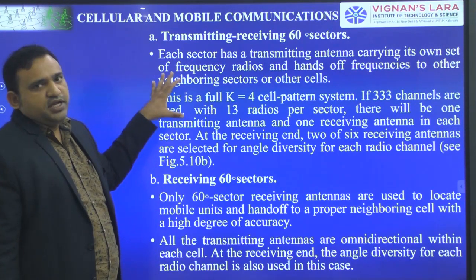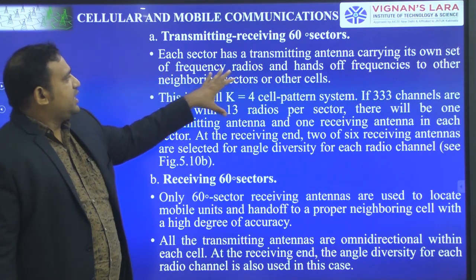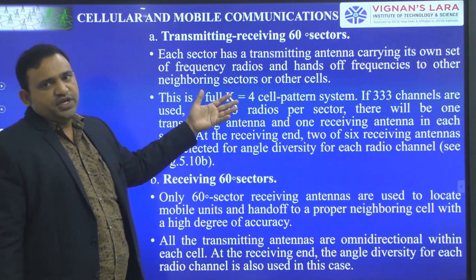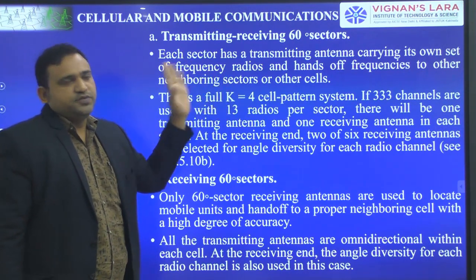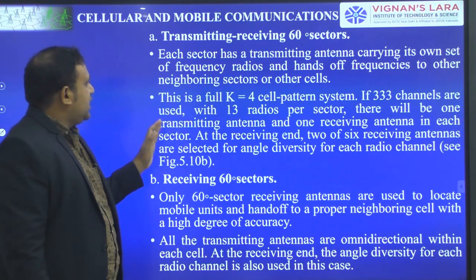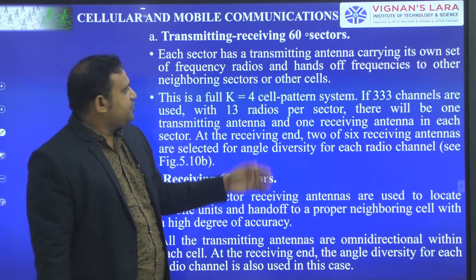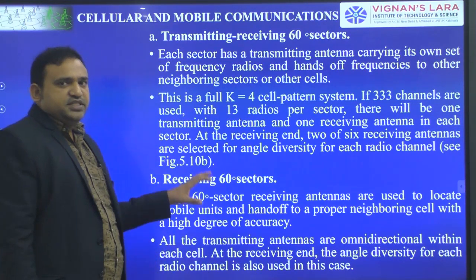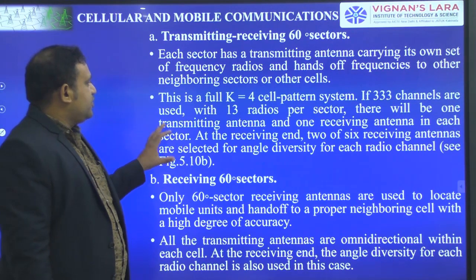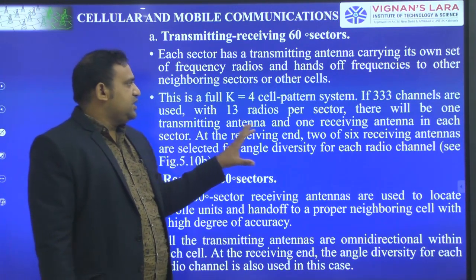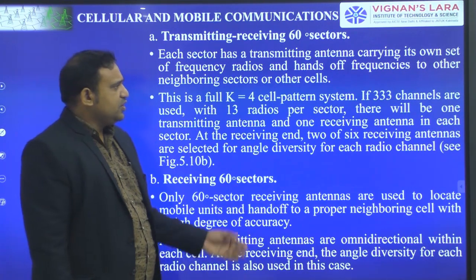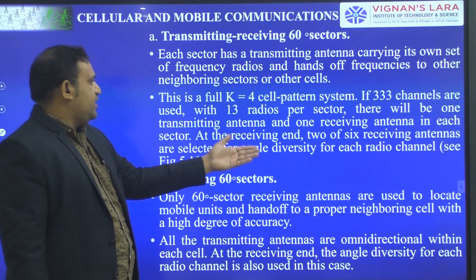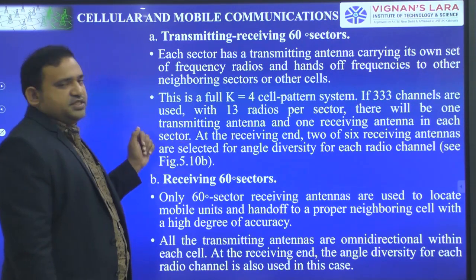Each sector contains a transmitting antenna carrying its own frequency radios, and hand-off is also possible. These are for the full K equal to 4 cell pattern system. If there are 333 channels, we are going to use only 30 cell radios per sector, and there will be one transmitting antenna and one receiving antenna in each sector.